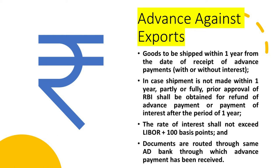In case shipment is not made within one year, partly or fully, prior approval from RBI shall be obtained for the refund of advance payment or payment of interest after the period of one year. If the Indian company cannot produce and export the products within a year, it must get prior approval from RBI before making the refund. The rate of interest shall not exceed LIBOR plus 100 basis points.